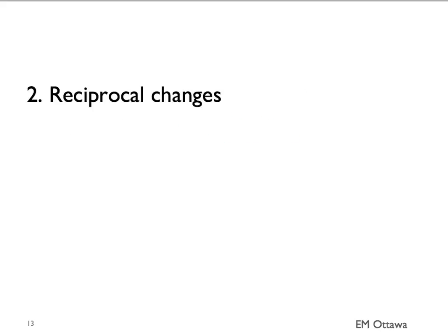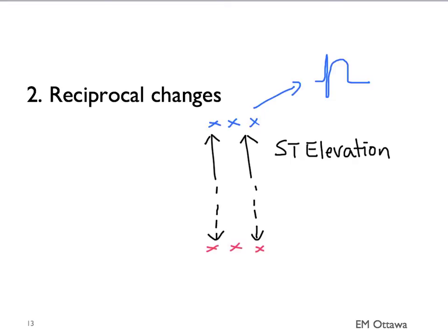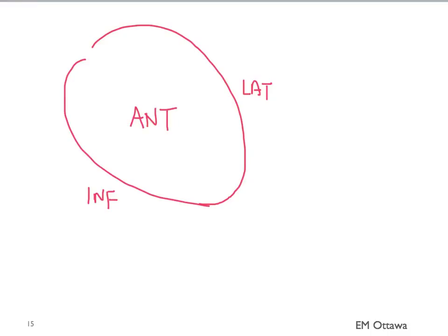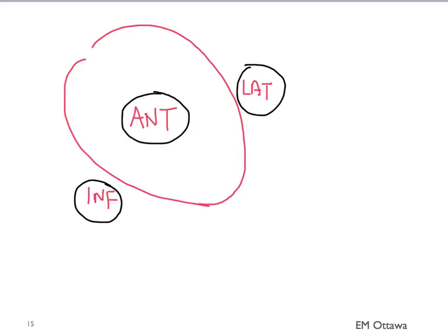The second part of an ST elevation MI has to do with reciprocal changes. It refers to the fact that if you have ST elevation going on in one territory of the heart, the ECG leads corresponding to the opposite territory should show ST depression — almost like a mirror image of the ST elevation. The lateral wall of the heart is directly opposite to the inferior wall, and the anterior wall is opposite to the posterior wall.